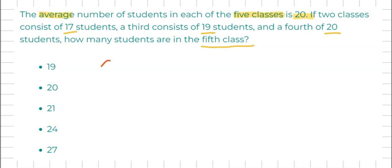So the average is 20 and it's going to equal all of the five classes. So we've got here 17